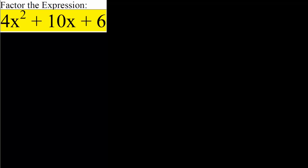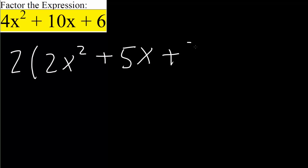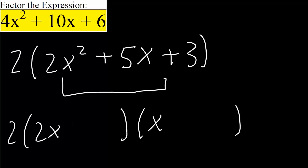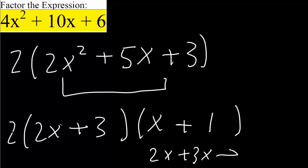For the third problem, we can factor out a 2 immediately: 2 times the quantity 2x squared plus 5x plus 3. Now we factor the trinomial: 2x times x gives 2x squared. There's only one possibility for 3: 1 times 3. So we get (2x + 1)(x + 3). Checking: 2x times 1 is 2x, and 3 times x is 3x, giving 5x in the middle — correct.